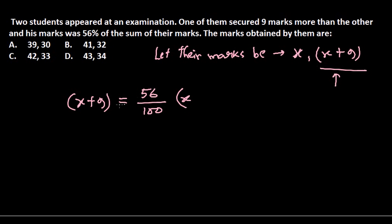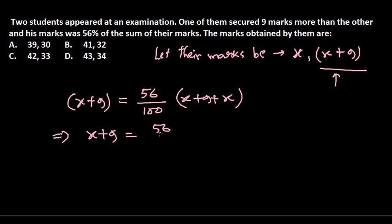The mark of this student is x plus 9, and the mark of the other student is x. So the sum of their marks is x plus 9 plus x. If we put it into the equation, we get: x plus 9 equals 56 by 100 times (2x plus 9).